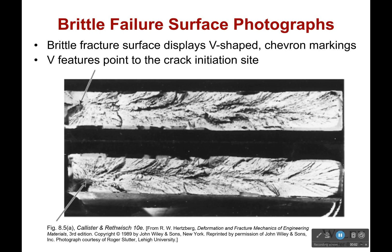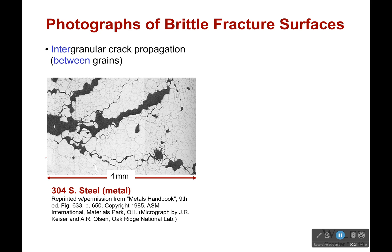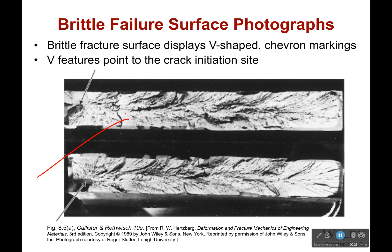Now, brittle failure, while we say it happens very, very quickly, it doesn't necessarily mean that we can't tell where it started from. Where did that crack first begin? We don't necessarily get to see what the defect was that caused that crack to begin there, but we can find it fairly easily. Now, how do we do that? Well, this is two cross sections of the same piece that got broken off.